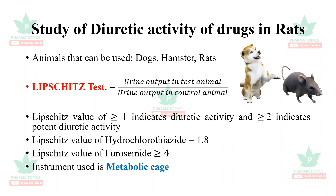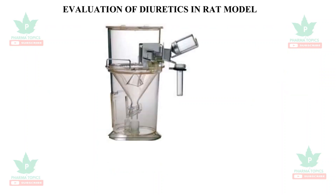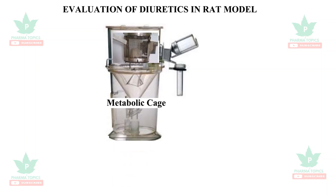The instrument used is the metabolic cage. This is the metabolic cage. The animal is placed in the cage, and when placed on the main floor, we collect the urine volume. In the lower compartment, we collect the volume of urine.